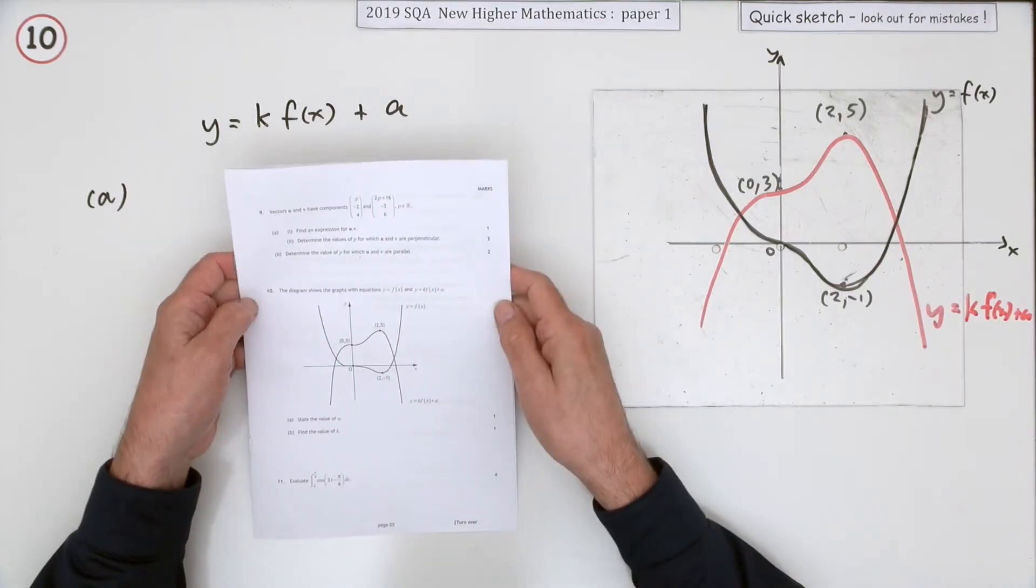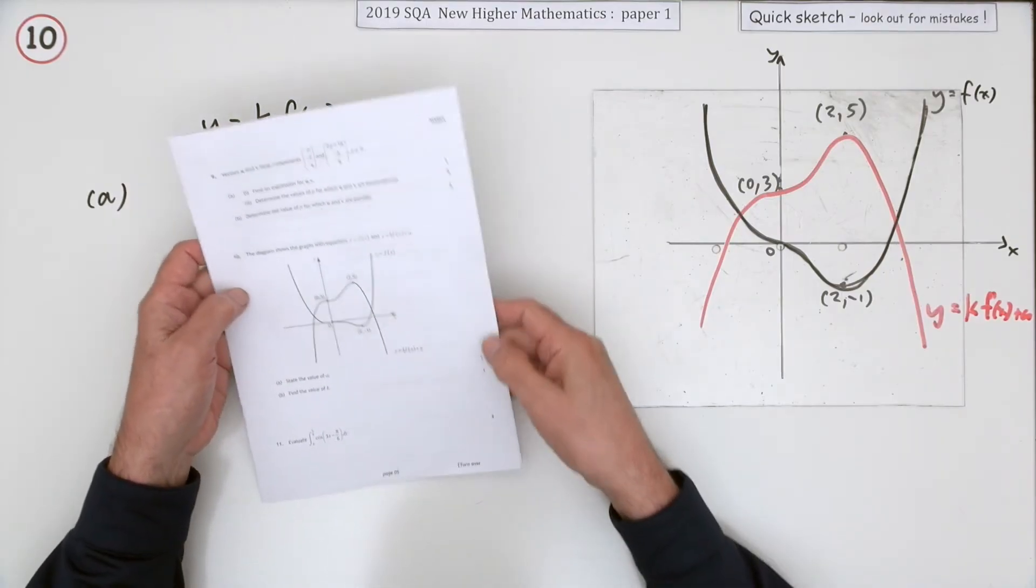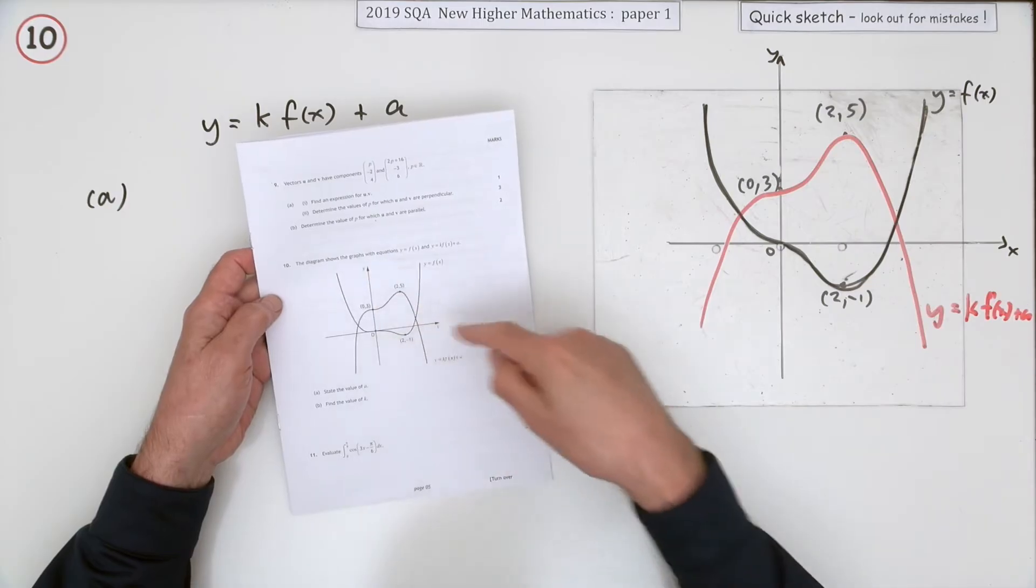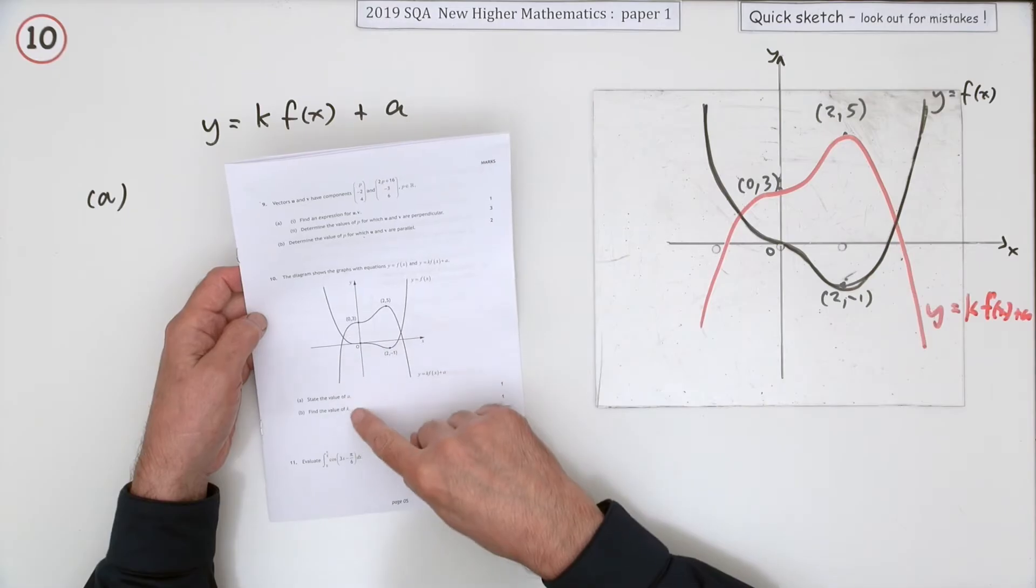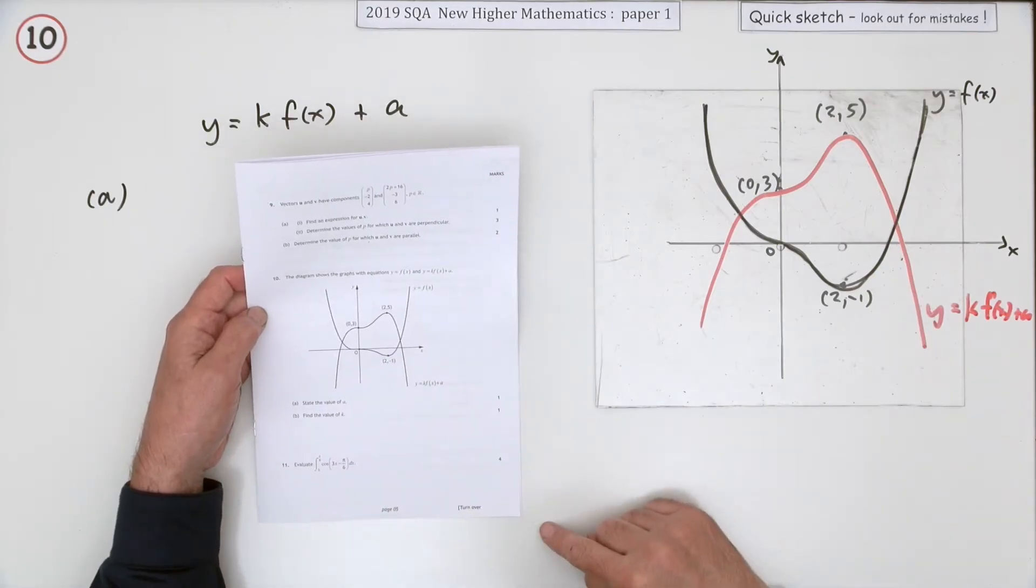Number 10 from the 2019 Higher Maths Paper 1. Just a little two-mark question on the transformations of graphs of a function. There's only two marks for simply stating certain values.